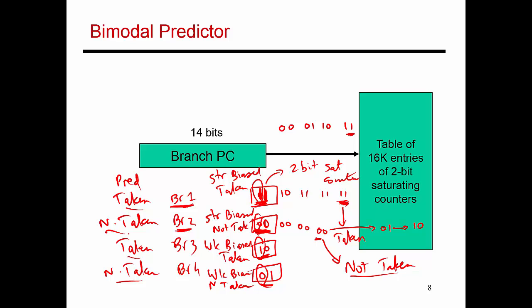What we need to discuss next is how the many branches in a program map to a general branch predictor structure. That's what I'm showing you in this figure.